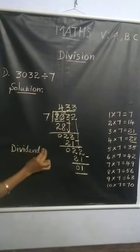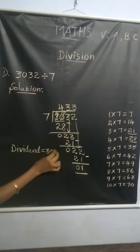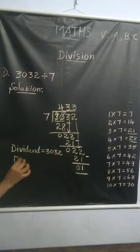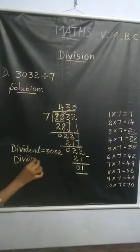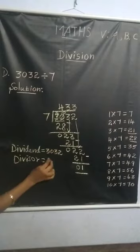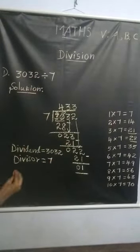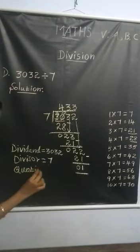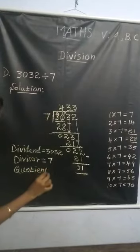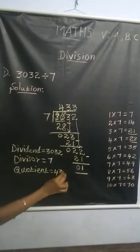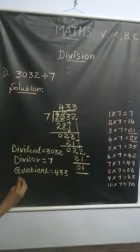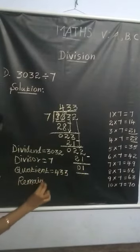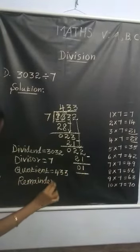Dividend equals 3032. Divisor equals 7. Quotient equals 433. Remainder equals 1.